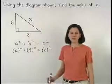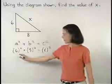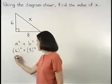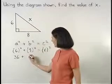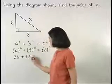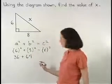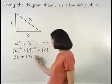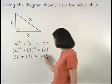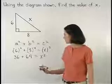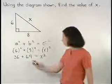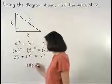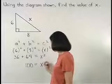Solving from here, 6 squared is 6 times 6, or 36, and 8 squared is 8 times 8, or 64. So we have 36 plus 64 equals x squared. 36 plus 64 is 100, so we have 100 equals x squared.